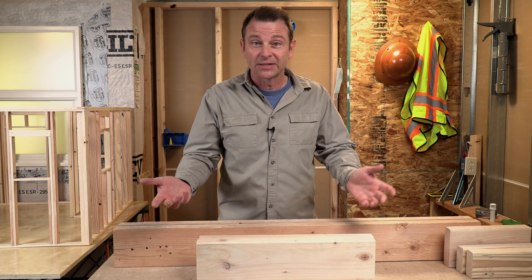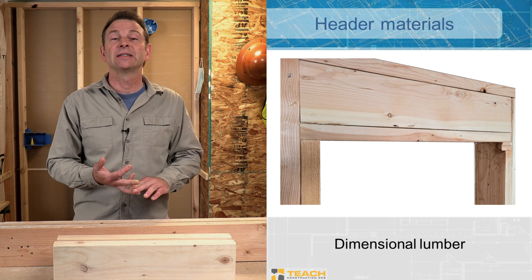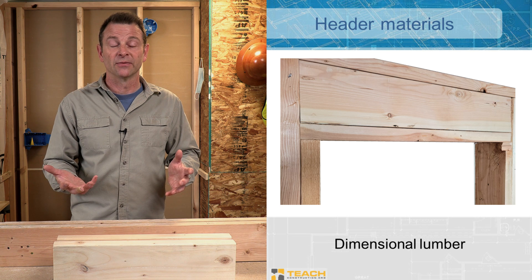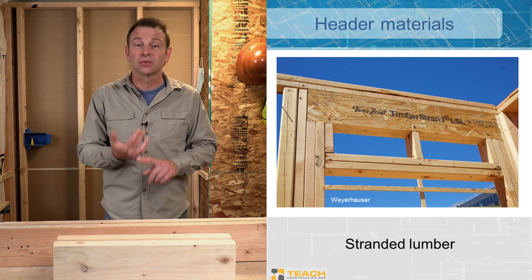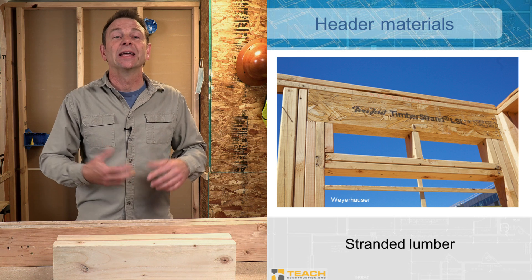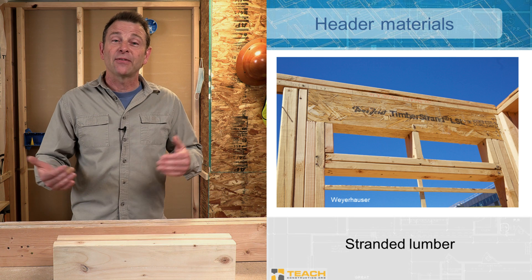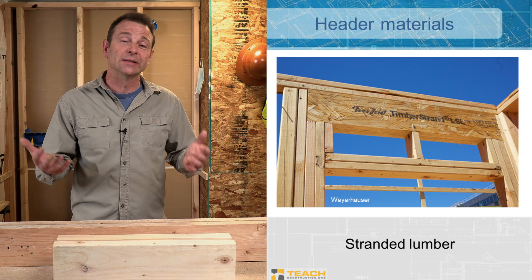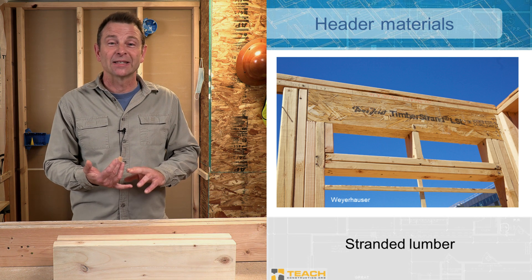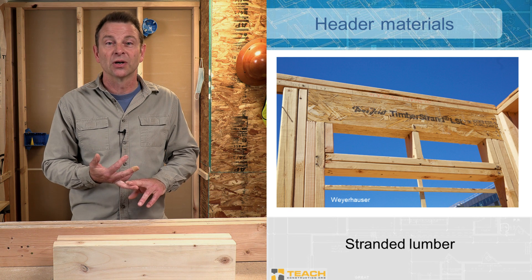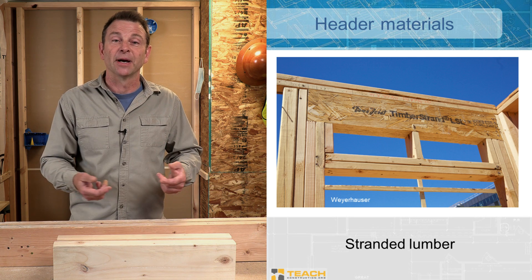To start with, we have dimensional lumber. You might see a header built out of any stock lumber size, whether that's a 2x4, 2x6, 2x8, 2x10, or 2x12. If you need a stronger header, you might see an engineered material. Our engineered materials would be stranded lumber, and stranded lumber gives us the ability to make that piece any size we need it. A lot of our larger spans will require these engineered materials. We can make this material straighter, stronger, and more dimensionally stable than our natural or dimensional lumber.